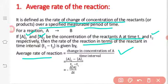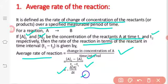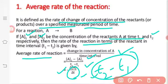For average rate, the change in concentration of A is A2 minus A1, and the time interval is T2 minus T1. So delta A divided by delta T means change in concentration of A divided by change in time T. Delta A equals final concentration minus initial concentration, and delta T equals T2 minus T1. The average rate of reaction is the change in concentration of reactant or product over a specified measurable period of time. If A1 concentration is greater than A2, then we use a negative sign.